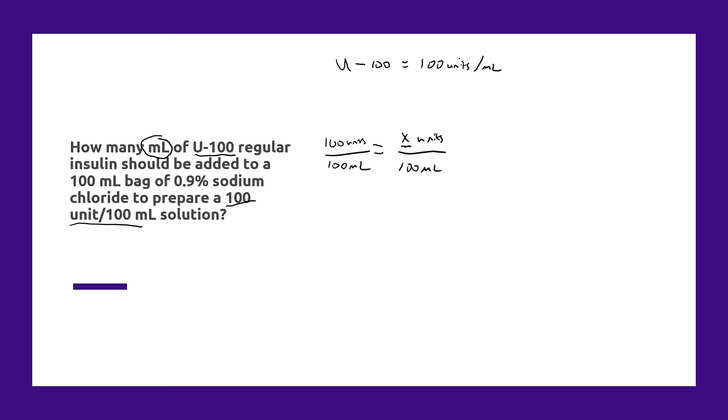And obviously if you do this cross multiplication, that's 100 units divided by 100 mL. Cross multiply here. You always cross multiply like that, 100 mL. When you do that your milliliters are going to cancel out and that leaves us with 100 units.